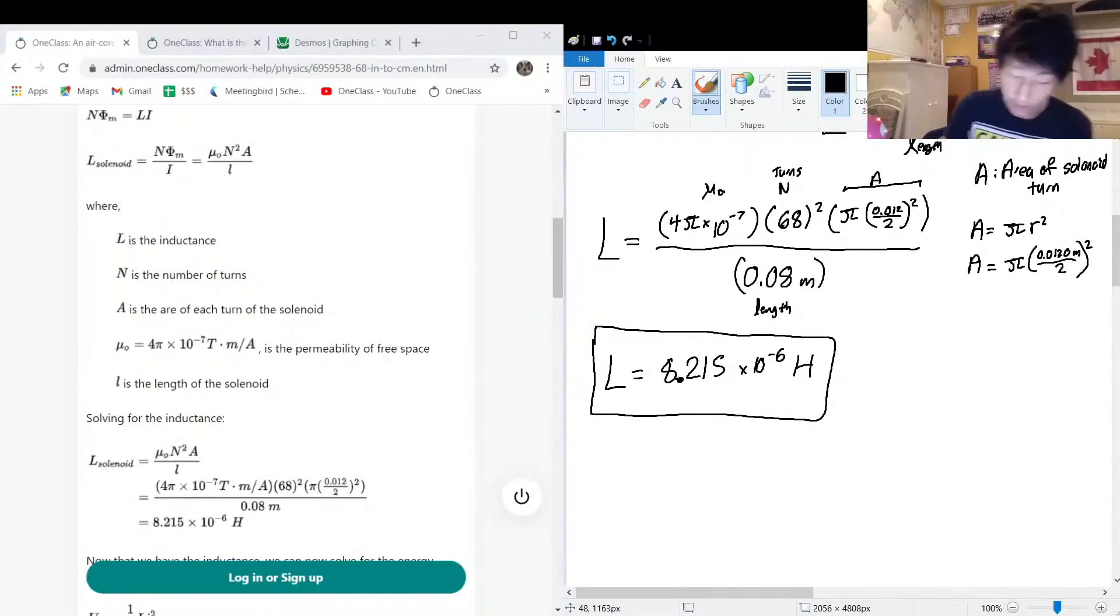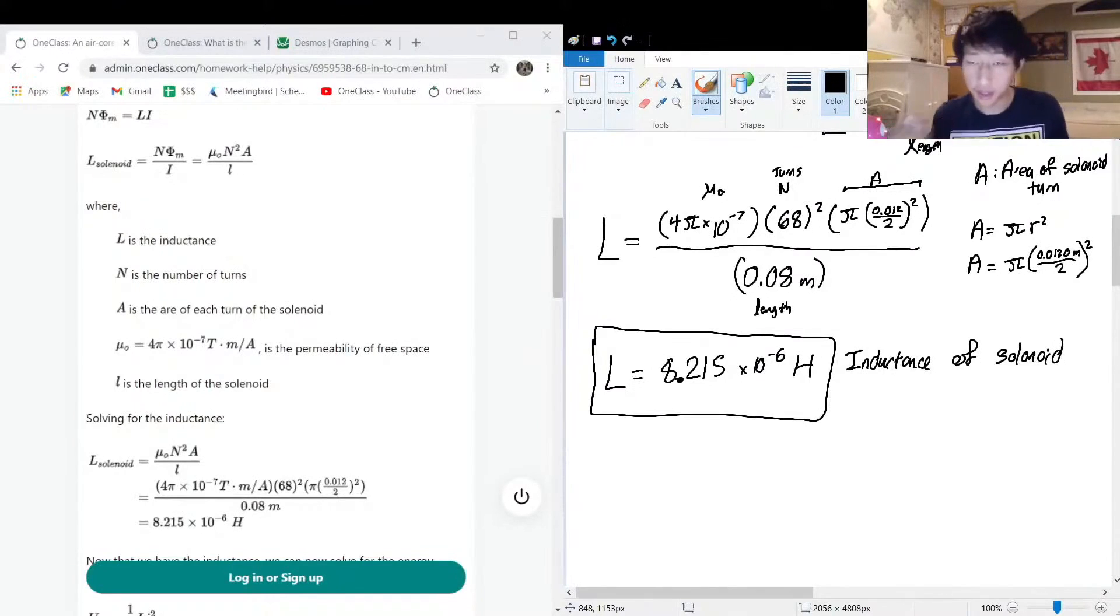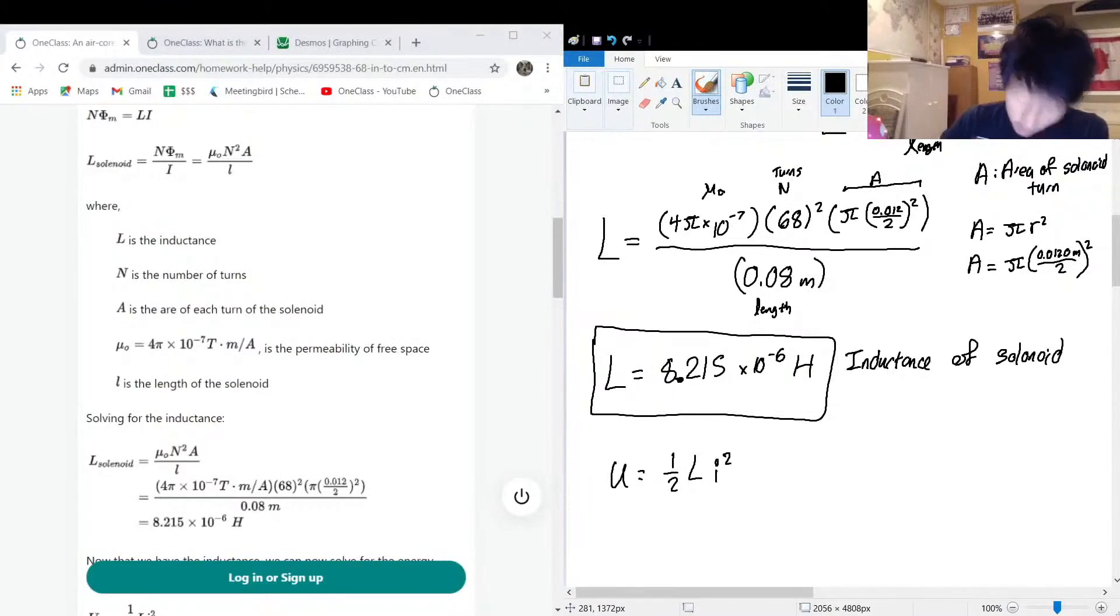So this is the inductance of solenoid. That's awesome. So now that we have the inductance of the solenoid, we can now go back to our original equation. I'll rewrite it down here. U equals one half L I squared. And we can sub in our I and L values to find out the potential energy. So let's do that.